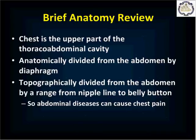You should already be familiar with the anatomy of the chest, but as a brief review, the chest is the upper part of the thoracoabdominal cavity — a continuous cavity that starts at your shoulders and ends at the base of your pelvis. Anatomically, it's divided from the abdomen by the diaphragm, the large muscle that causes the lungs to expand and contract. Topographically, the division depends on where the diaphragm is during breathing — at maximum exhalation it may be up at the nipple line, and at maximum inhalation it may be down to the umbilicus. So abdominal diseases can cause chest pain.